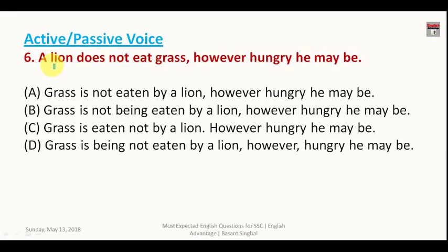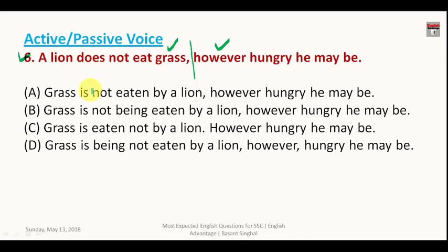Now we start the active-passive voice section. Question six: 'A lion doesn't eat grass however hungry he may be.' Grass is the object, so the sentence will start with 'grass'. This is present simple tense; in passive voice we use 'is/am/are'. The answer is A: 'Grass is not eaten by a lion however hungry he may be.'